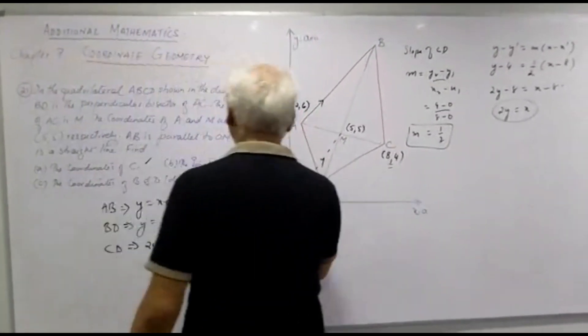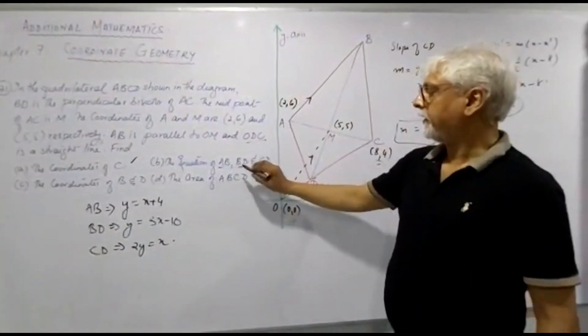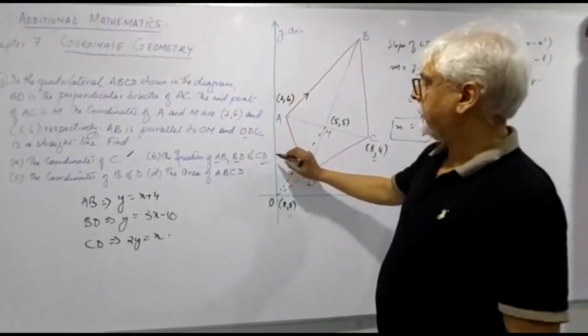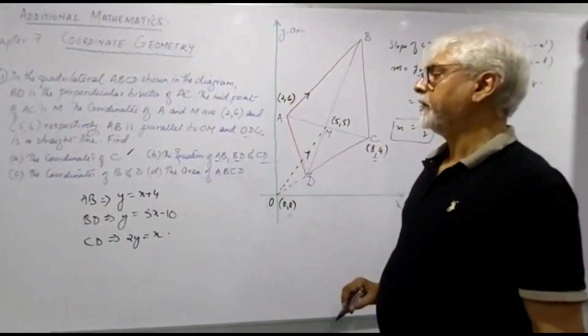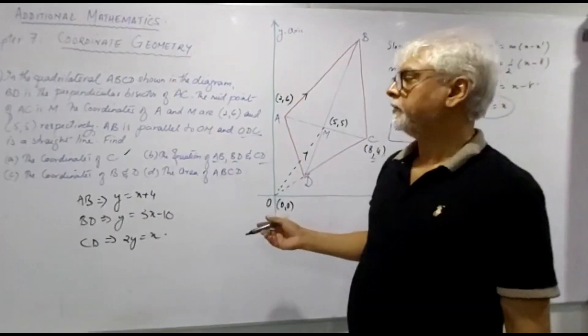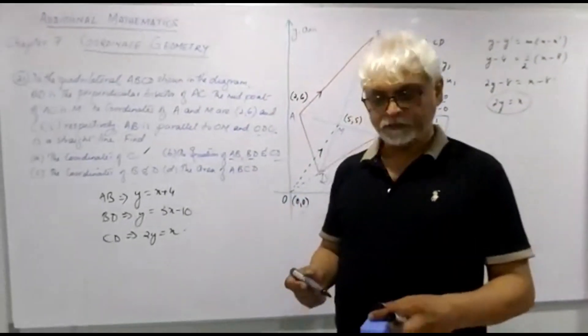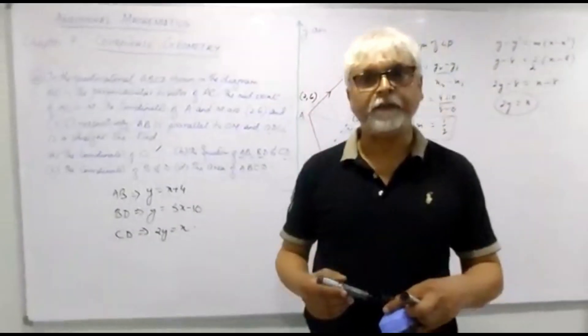So we have found the equations of all three lines: AB, BD, and CD. I will be continuing with this question in my next lesson. Hope to see you then. Take care.